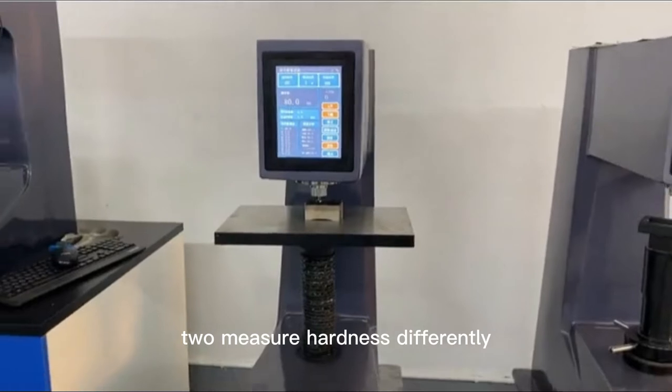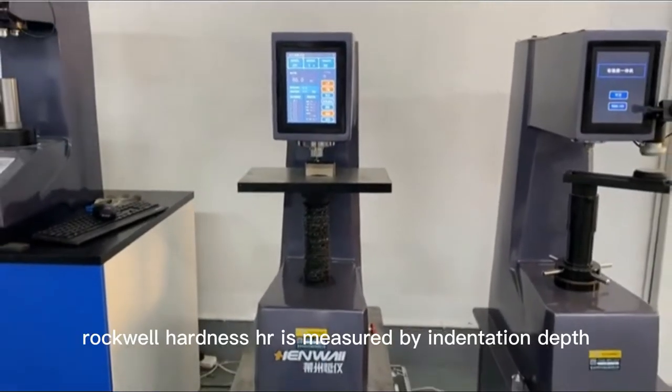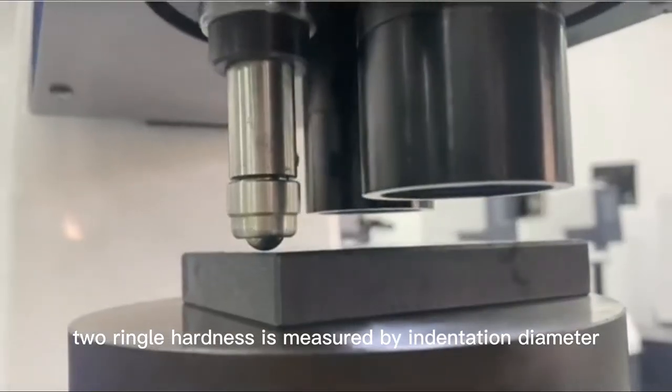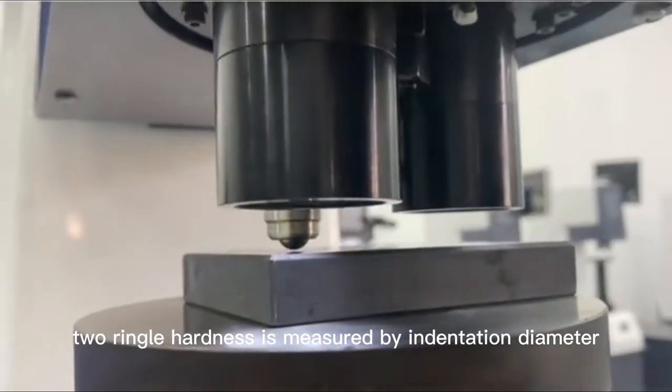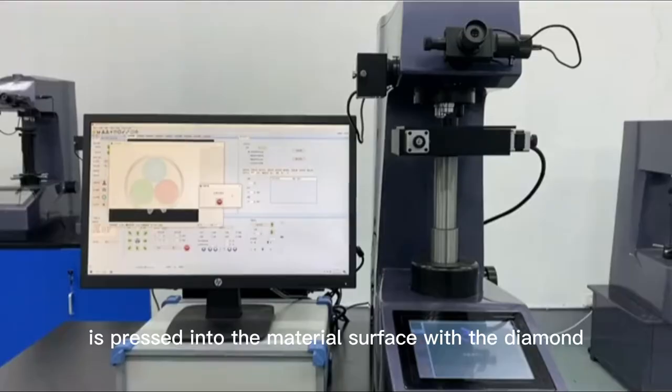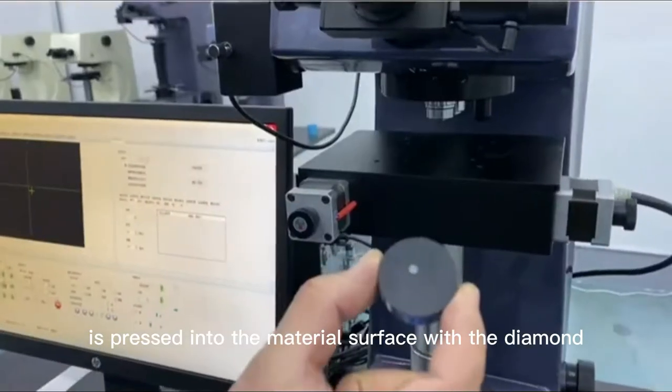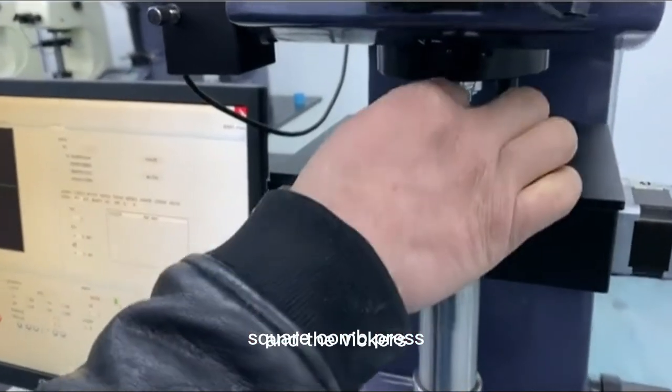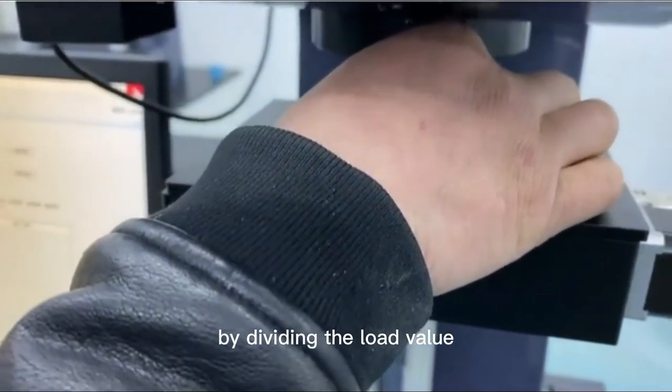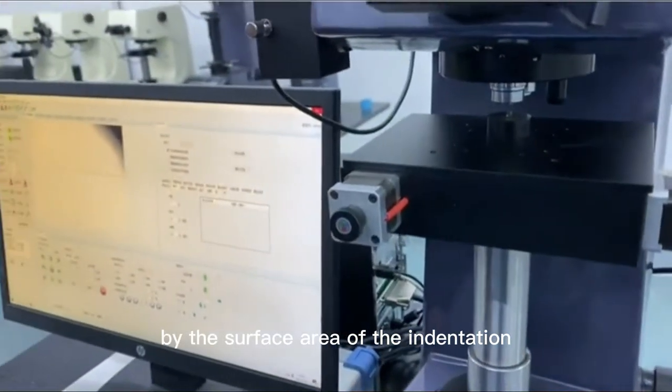Two, measure hardness differently. First, Rockwell hardness is measured by indentation depth. Second, Brinell hardness is measured by indentation diameter. Third, Vickers hardness is pressed into the material surface with the diamond, and the Vickers hardness value is calculated by dividing the load value by the surface area of the indentation.